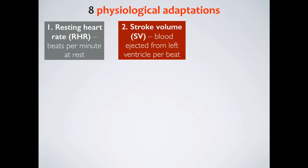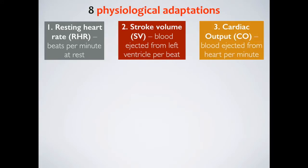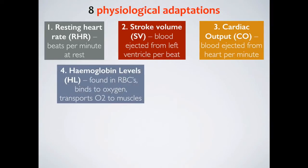The second is stroke volume, which can be defined as the amount of blood ejected from the left ventricle with each beat. The third is cardiac output, which is the amount of blood ejected from the heart per minute.